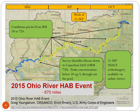The harmful algal bloom event on the Ohio River this past fall woke us up to what happens in southern Ohio — not just the northern part of the state. There was a 670-mile-long harmful algal bloom on the Ohio River, stretching almost from Pittsburgh clear down to Evansville, Indiana. Contributions came from not just Ohio, but also Pennsylvania, West Virginia, Kentucky, and even Indiana.